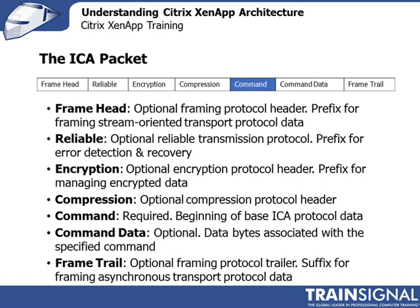This is what constitutes the ICA packet — what it puts together when sending its data through the different layers of the OSI model from point A to point B. The optional and required frames together make up that particular ICA packet.